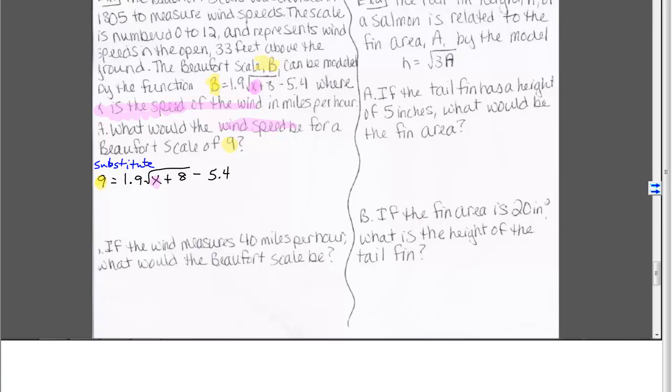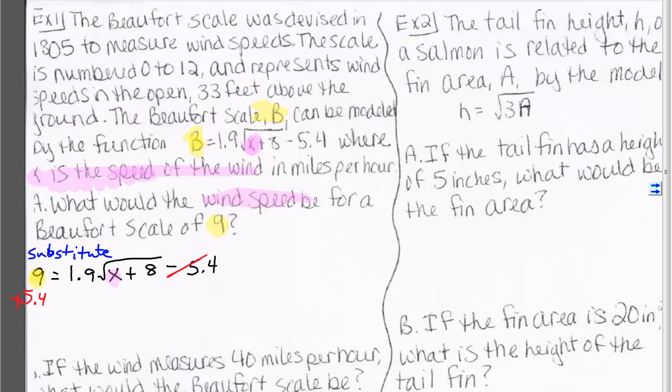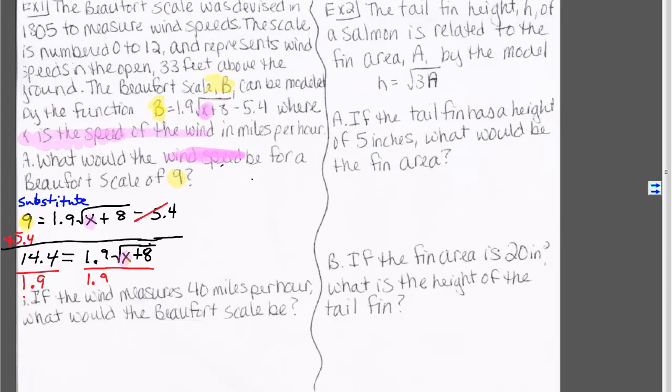We are given b to be 9 and we are looking for x, so we substitute 9 everywhere we see a b and solve for x. Now we start isolating the radical by adding 5.4 to both sides. Then we divide both sides by 1.9.